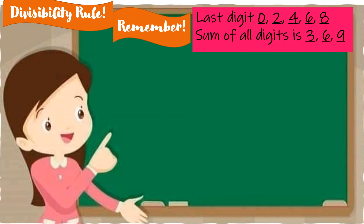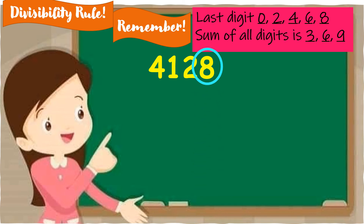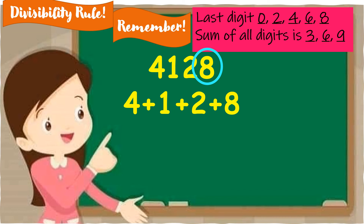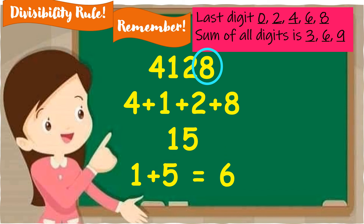Remember: if the last digit is 0, 2, 4, 6, or 8, it is divisible by 2. And if the sum of all digits is 3, 6, or 9, it is divisible by 3. We have another example: 4,128. The last digit is 8, so it is divisible by 2. Now adding all digits: 4 plus 1 plus 2 plus 8 equals 15. Still 2 digits, so 1 plus 5 is 6. The sum is 6, therefore 4,128 is divisible by 6, because it is divisible by both 2 and 3.